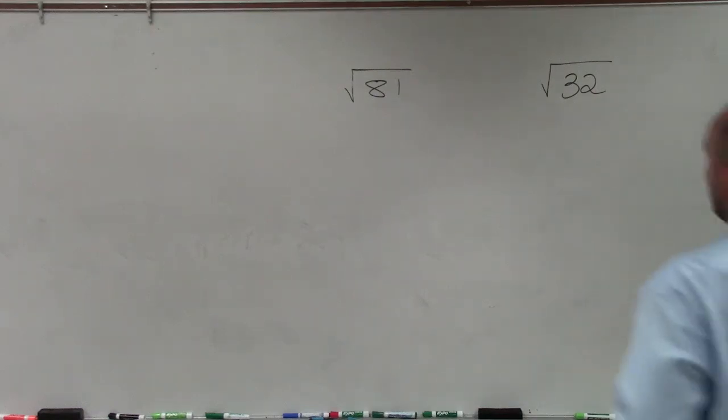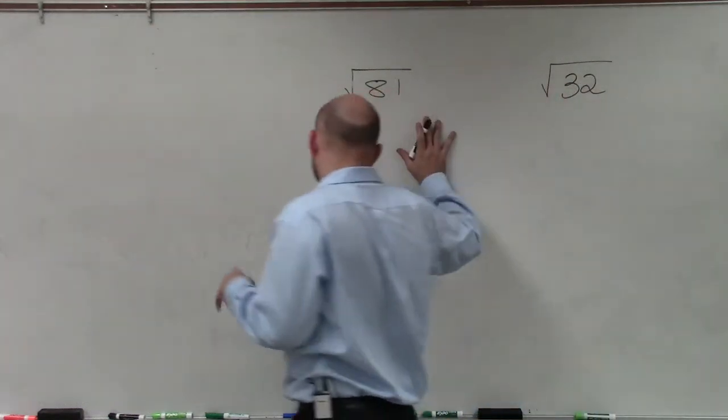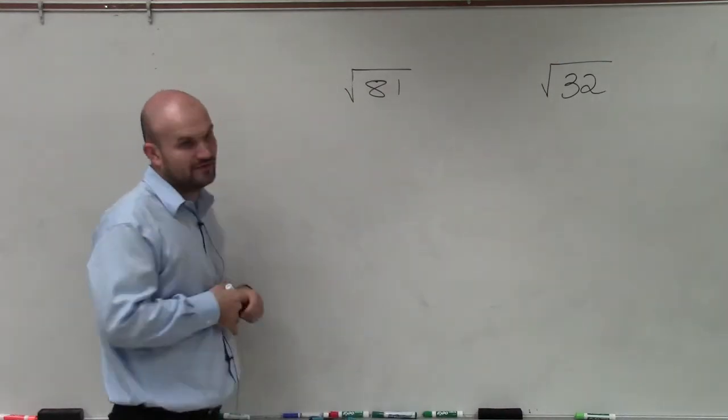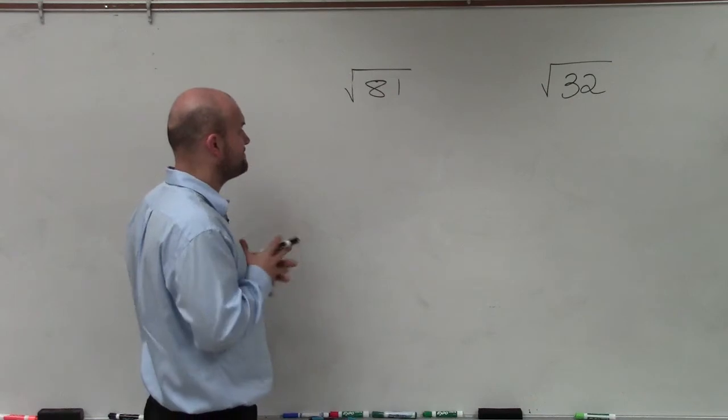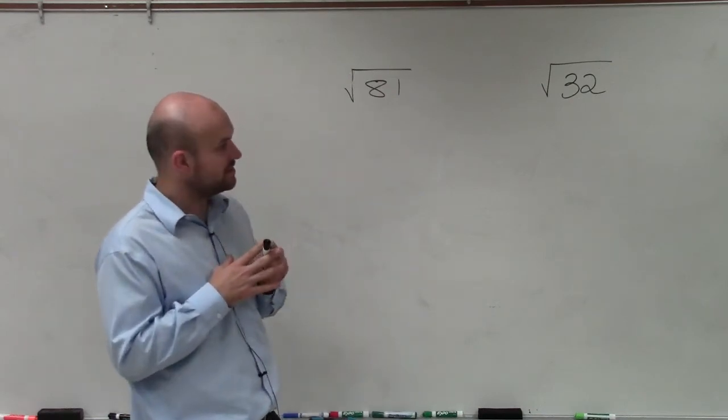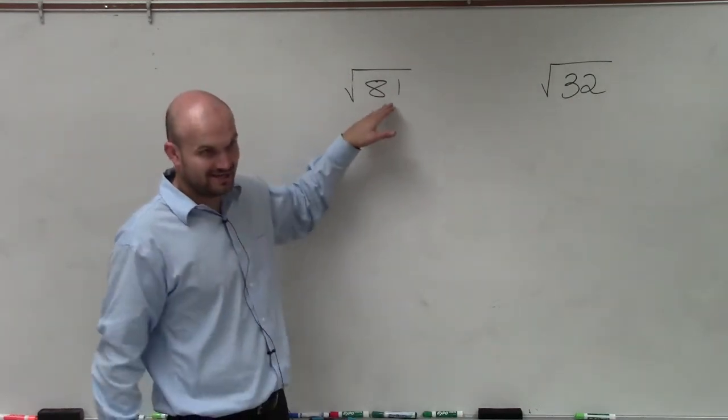If you are going to take the square root of 81 here, you hopefully already know that the square root of 81 is 9. But what we're going to do is work on using prime factorization to show why the answer is 9, or a way to obtain that.